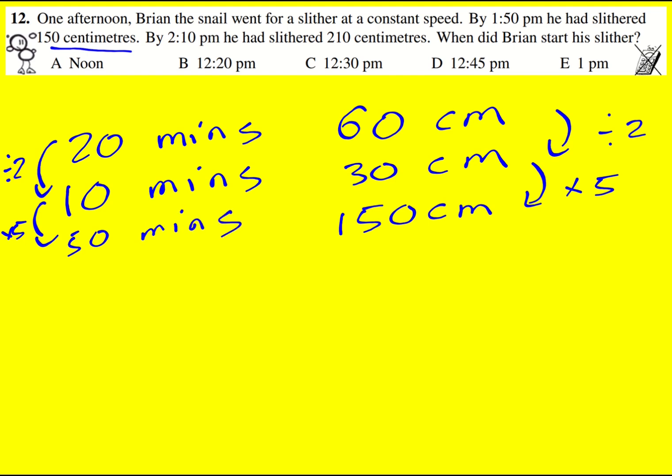So that means we need to do 1:50 pm and subtract 50 minutes. Therefore Brian starts his slither at 1 pm.